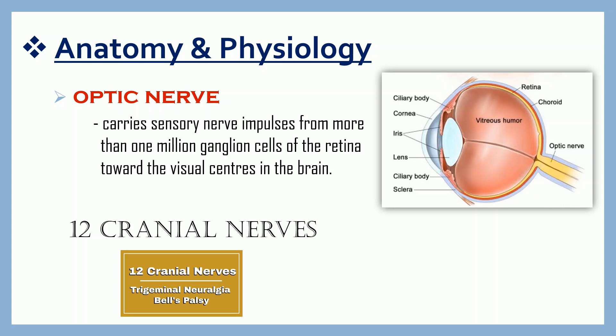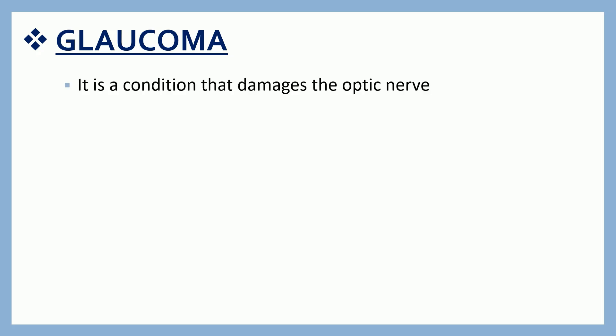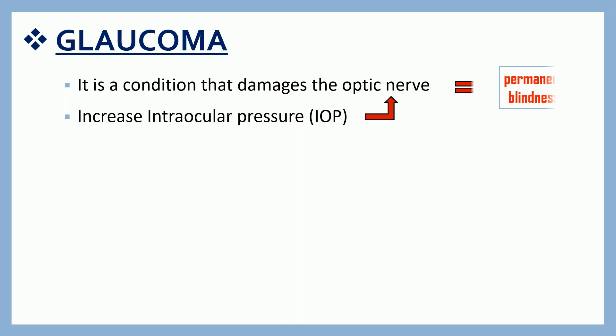Let's now proceed to the common disorders that are frequently asked in your examinations. The first disorder is glaucoma. It is a condition that damages the optic nerve. It is often linked to a buildup of pressure in your eye. The increased pressure in your eye, called intraocular pressure, can damage your optic nerve. If the damage worsens, it can lead to permanent blindness.